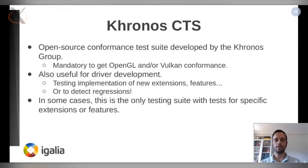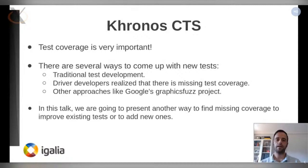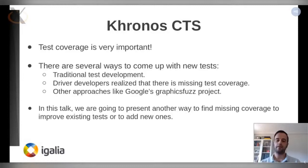Because of that, the test coverage is very important. There are several ways to come up with new tests. First, we have the traditional approach, which is doing the normal test development, like, for example, developing tests for new extensions. Then there is another way, which is when the driver developers realize that there are missing test coverage in CTS. For example, we collaborate with our colleagues at Igalia that develop the graphics drivers for the Raspberry Pi 4 in order to develop the CTS tests that they found gaps in the coverage.